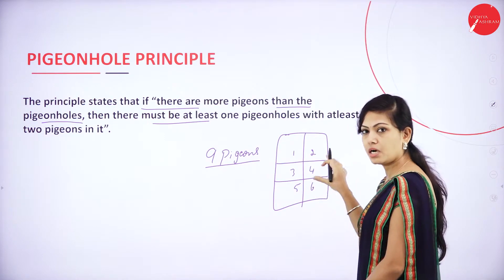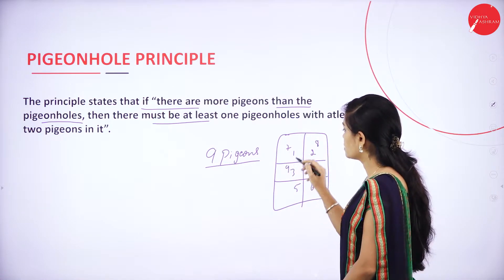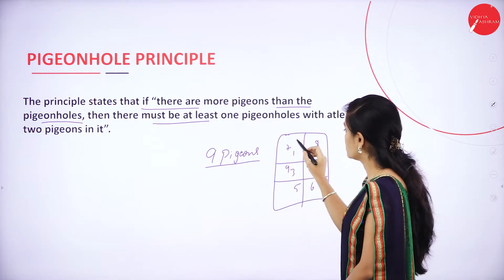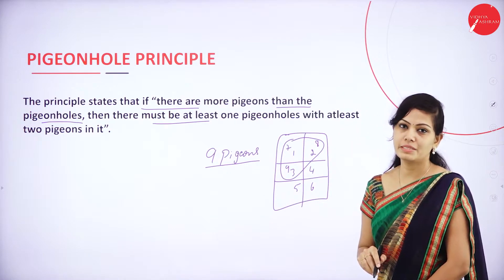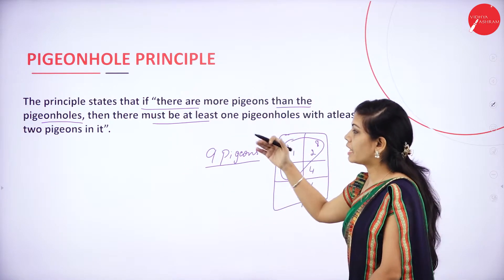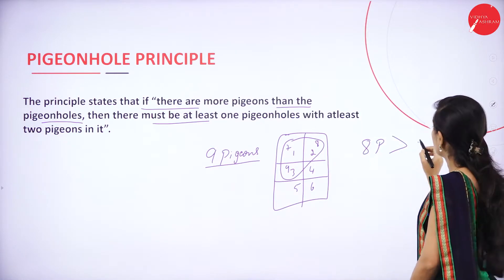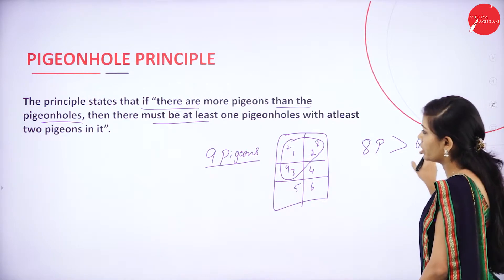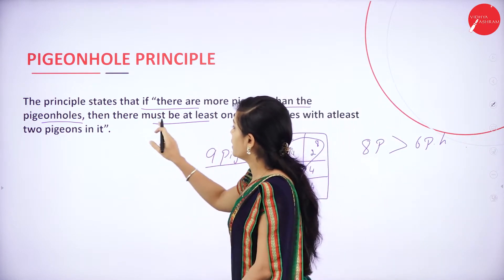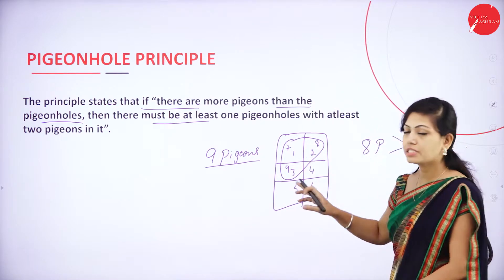For example, 1, 2, 3, 4, 5, 6 pigeons are accommodated, and now again I will accommodate 7, 8, 9. So at least 1 pigeon hole contains 2 pigeons in it. This is the concept called pigeon hole principle. If there are more pigeons than the pigeon holes — for example, 8 pigeons greater than 6 pigeon holes — then there must be at least 1 pigeon hole with at least 2 pigeons in it.